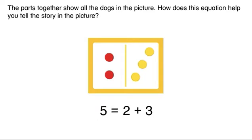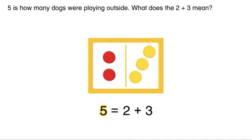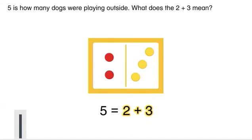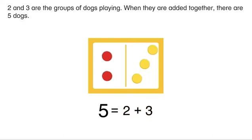How does this equation help you tell the story in the picture? Each part of the equation represents the whole or the parts. What does the five mean? Five is how many dogs were playing outside. What does the two plus three mean? Two and three are the groups of dogs playing outside. When they are added together, there are five dogs.